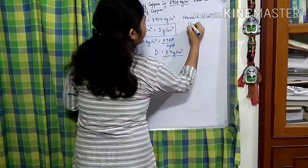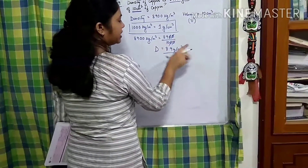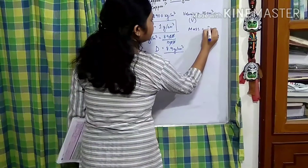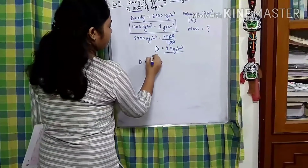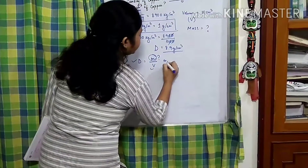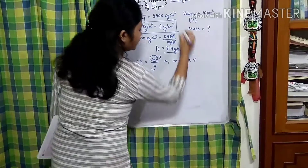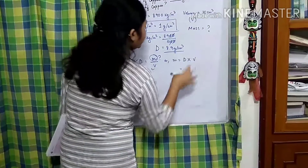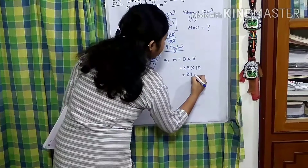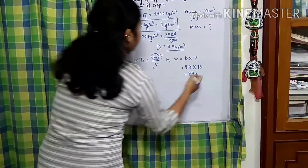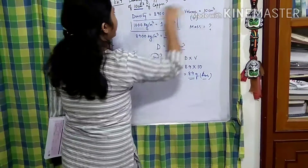Now we have volume in centimeter cube and density in gram per centimeter cube. We find mass because that is what has been asked. Density equals mass per volume, so mass equals density multiplied by volume. Mass equals 8.9 multiplied by 10 = 89 gram. This is the answer for the mass asked in example number 9.